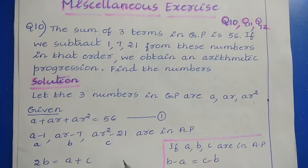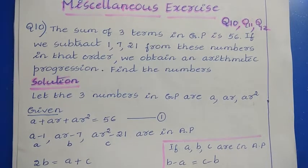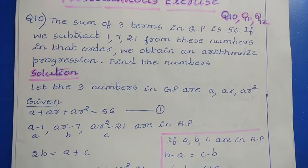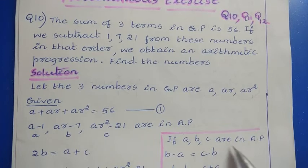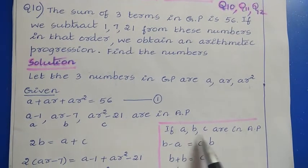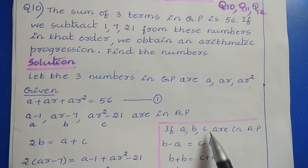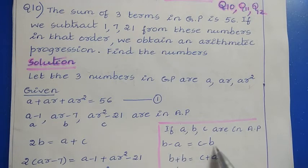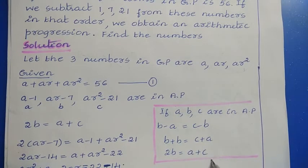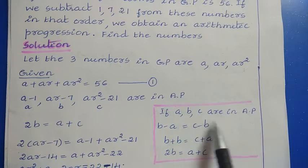We need to find the value of A. If three numbers A, B, C are in arithmetic progression, then the common difference between consecutive terms is equal, that is B minus A equals C minus B. Rearranging: 2B equals A plus C. This is the equation we use for arithmetic progression.